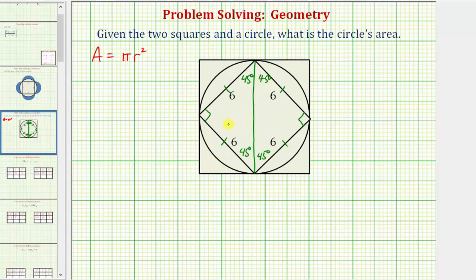So we can determine the hypotenuse of these right triangles — which is also the diagonal of the square and the diameter of the circle — using the relationship among the three sides of a 45-45-90 right triangle, or we could use the Pythagorean theorem. Let's show both.